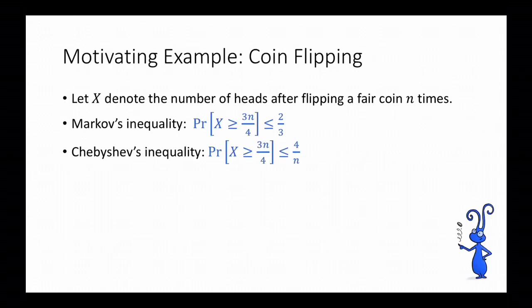As a motivating example for Chernoff bounds, let's consider the same coin flipping example that we looked at when we talked about Markov's and Chebyshev's inequalities. Recall that we were trying to bound the probability that x, the number of heads after flipping a fair coin n times, was greater than or equal to 3n over 4. Markov's inequality said that this probability was at most 2/3, while Chebyshev's inequality said that this probability was at most 4 over n. So Chebyshev's inequality was better than Markov's here, but we could hope to do better still.